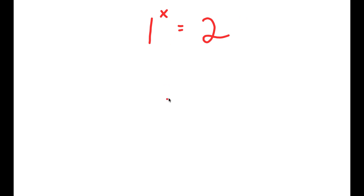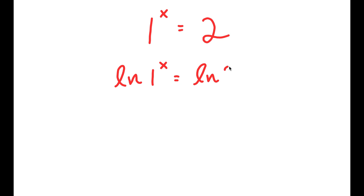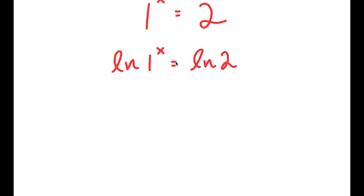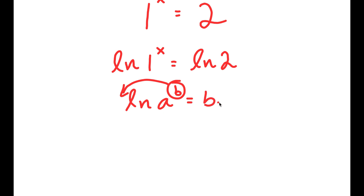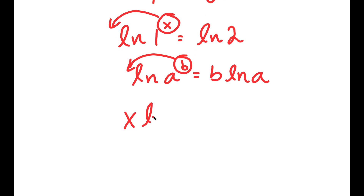Well, there is a method to solving this. So first off, let's take the natural log or ln on both sides. So I'm going to do ln of 1 to the power of x is equal to ln 2. Now, if I have something in the form ln of a to the power of b, I can move the exponent b to the front, so this equals b times ln a. So I can move x to the front, and I get x times ln 1 is equal to ln 2.